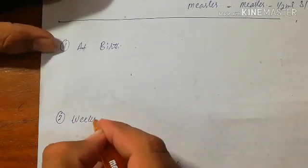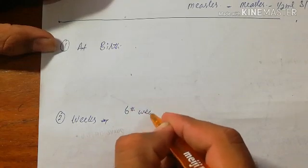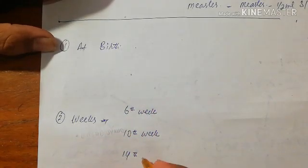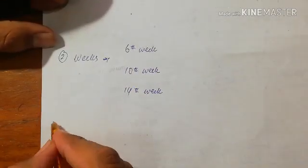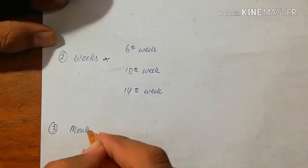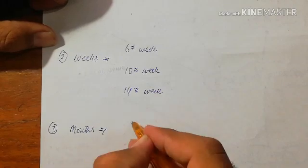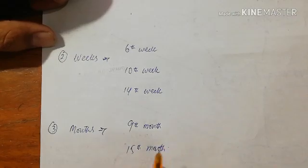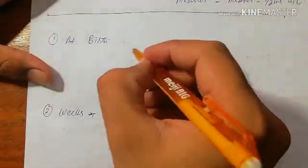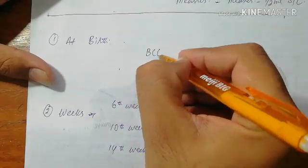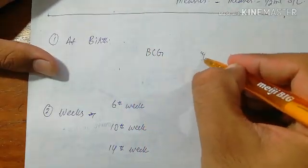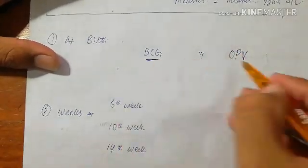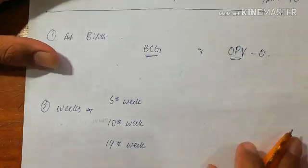To memorize the schedule, let's divide the periods into: vaccines given at birth, then at weeks — including the sixth week, tenth week, and fourteenth week — and then vaccines given at months, which include the 9th month and 15th month. At birth, the vaccines given are BCG and oral polio vaccine OPV zero.